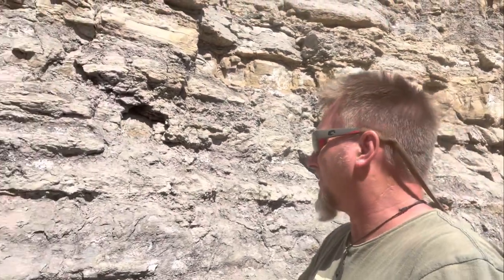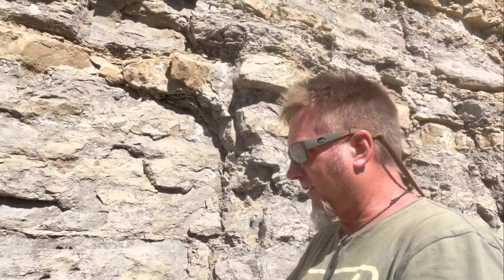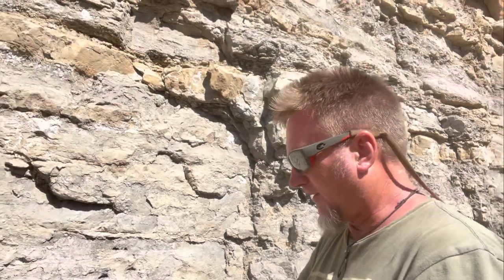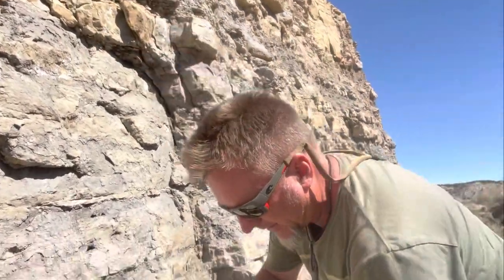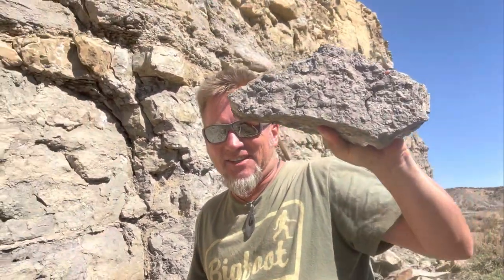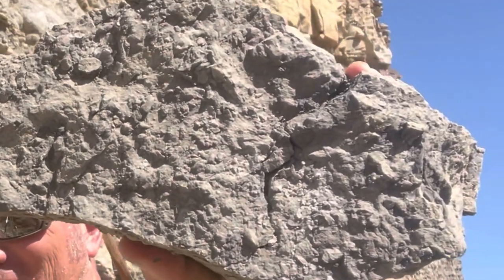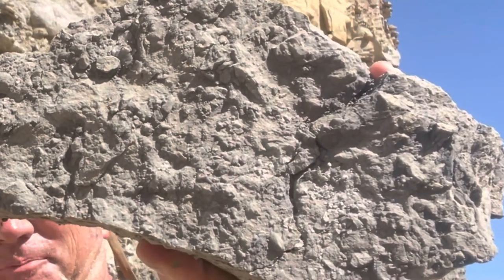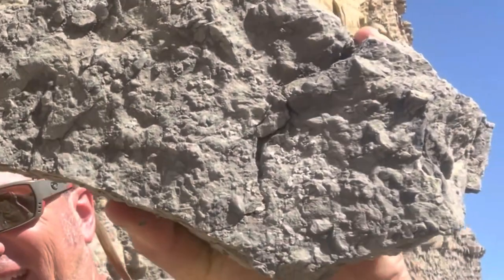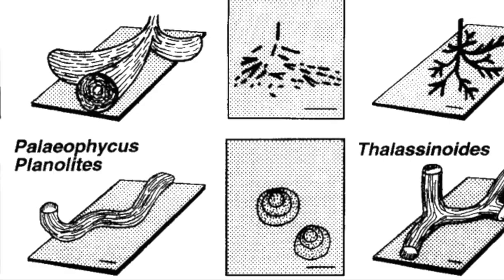We are getting more sand, and then it kind of switches back to muds and silts. Look at this talus chunk — that is pretty well burrowed, there's a whole lot of stuff in there. It looks like paleophicus, planolitis, maybe even some thalassinoides — the bigger burrows. That's the fancy way of saying horizontal and vertical burrows, probably made by shrimp and worms.